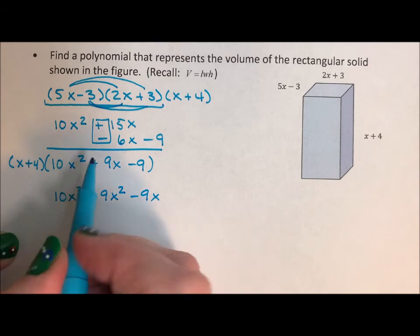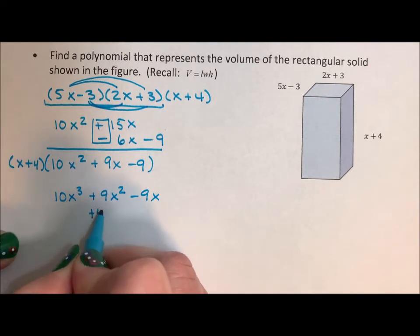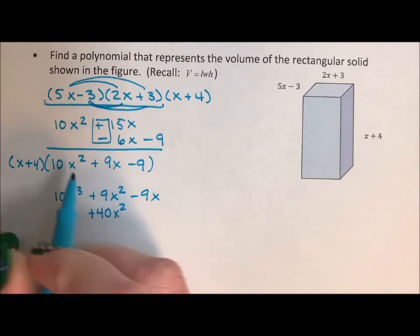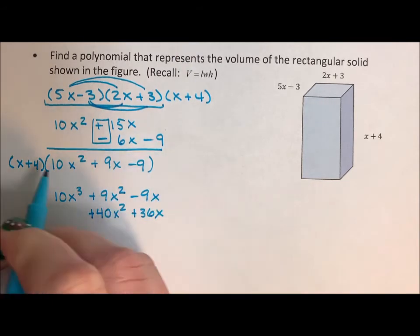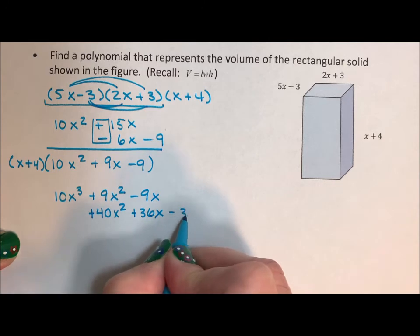4 times 10x squared is 40x squared. 4 times 9x is 36x. 4 times negative 9 is negative 36.